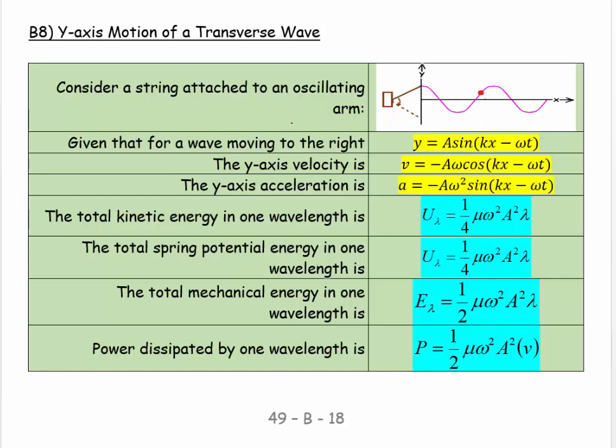We define the wave as y = A sin(kx - ωt). That's a wave that's going to the right. If we differentiate it, we find that v = -Aω cos(kx - ωt). And if we differentiate that again, we get a = -Aω² sin(kx - ωt). So those are readily accessible.